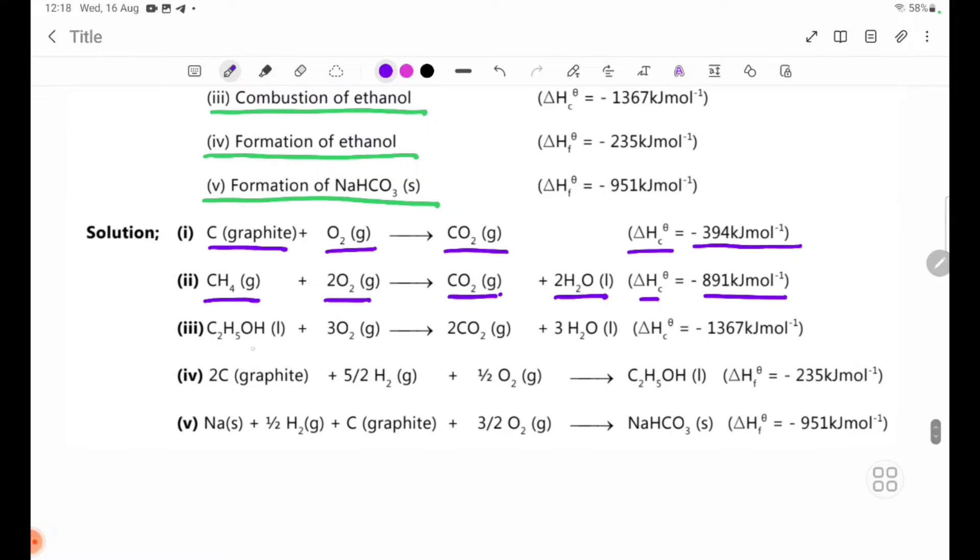Number 3: Combustion of ethanol. C2H5OH liquid plus 3O2 gas yields 2CO2 gas plus 3H2O liquid. Delta H theta C equals minus 1367 kilojoules per mole.